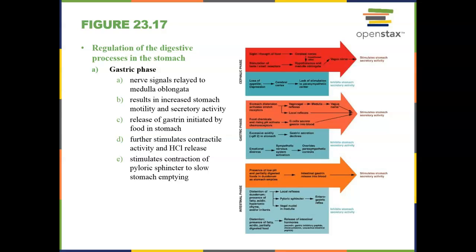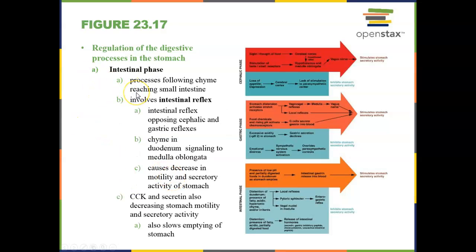The intestinal phase occurs once food hits the intestines. It opposes the cephalic and gastric phases — when food enters the intestines, cholecystokinin and secretin are released. These hormones decrease stomach motility and slow gastric emptying. This allows the body to absorb more nutrients by preventing too much material from entering the intestines at once, and it also stimulates the feeling of satiation — the sensation that you are full and don't need any more food.